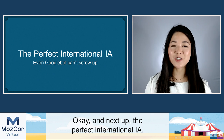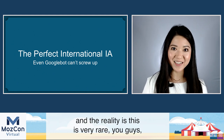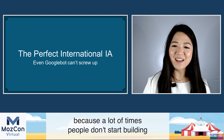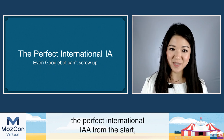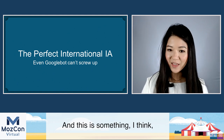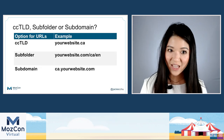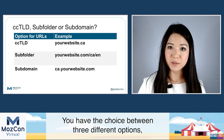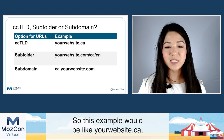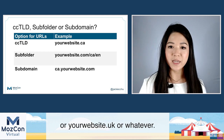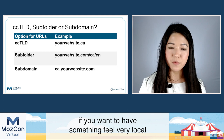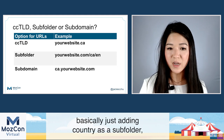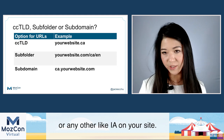Next up: the perfect international information architecture. If I were to start any site over again — and in reality this is very rare, a lot of sites aren't international to begin with — the most important thing when you first start doing an international site is thinking about how you're going to create unique URLs. You have three options: a CCTLD or top-level domain like yourwebsite.ca or yourwebsite.uk; a subfolder, basically adding country as a subfolder just like a category page; or a subdomain, like ca.yourwebsite.com.